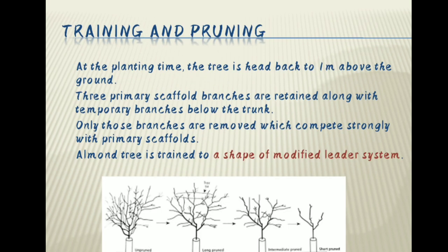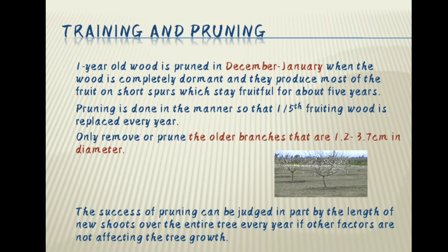Training and pruning. At the planting time, the tree is headed back to 1 meter above the ground. Three primary scaffold branches are retained along with temporary branches below the trunk. Only those branches are removed which compete strongly with primary scaffolds. The almond tree is trained to a modified leader system. One year old wood is pruned in December-January when the wood is completely dormant, and they produce most of the fruit on short spurs which stay fruitful for about 5 years. Pruning is done so that one-fifth of the pruning wood is replaced every year, targeting only older branches 1.2 to 3.7 cm in diameter.